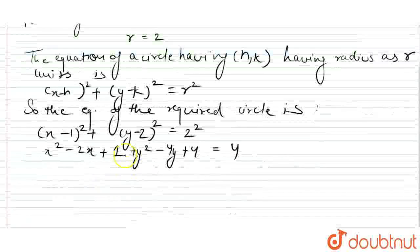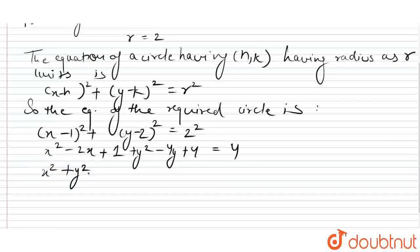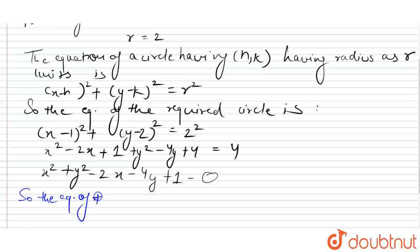Here we have x square plus y square minus 2x minus 4y plus 1 is equals to 0. So the equation of the circle is x square plus y square minus 2x minus 4y plus 1 is equals to 0. Right, thank you.